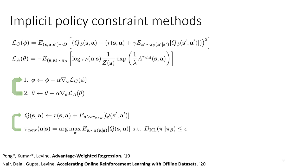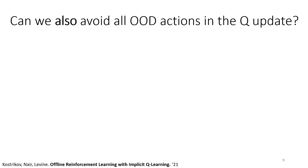The trouble with this approach is that in order to estimate advantage values, you still need to query out-of-distribution actions, because there's no guarantee that at intermediate stages in training, pi_theta will perfectly respect the constraint. If you choose lambda appropriately the constraint will be respected at convergence, but over the course of training the constraint may not be respected. There are actually two places where you end up querying out-of-distribution actions: in the target value where you compute the expectation under pi_theta, and when estimating the advantage as Q minus the expected value of Q under pi_theta.